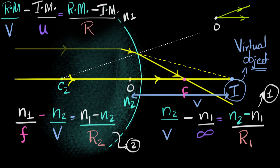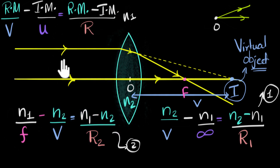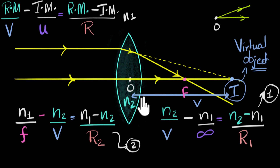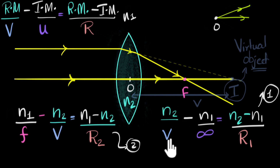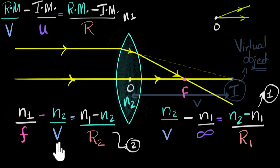Looking at the final picture, the intermediate image point I was something we constructed by ignoring the second surface — it's not a real meeting point of the rays. So V should not appear in our final equation. Conveniently, Equation 1 has a positive N2/V term and Equation 2 has a negative N2/V term. If we add the two equations, V cancels out, and we can find the focal length. It would be a great idea to pause the video and try adding the two equations yourself.